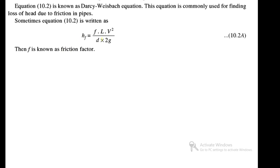The equation HF = 4·f·L·V² / (2·g·D) is known as the Darcy-Weisbach equation, commonly used to find the loss of head due to friction. Sometimes the equation is written with the factor of 4 absorbed into a friction factor F, giving HF = F·L·V² / (2·g·D), where F is known as the friction factor. If using the coefficient of friction, use 4fLV²/(2gD); if using the friction factor, use FLV²/(2gD).